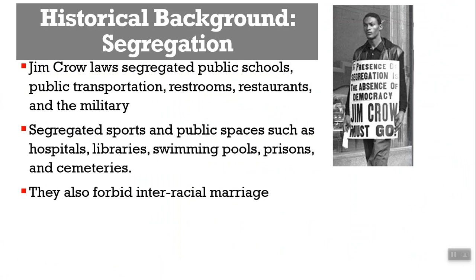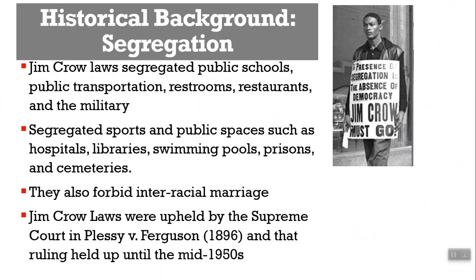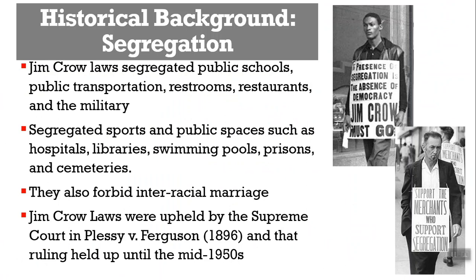Jim Crow laws were upheld by the Supreme Court in Plessy v. Ferguson in 1896. These laws really came into place after the Civil War, in response to the rights and freedoms that former slaves were getting, to curb where people could live — housing was highly segregated — to curb what jobs people were able to get, and to stop people of color from voting. These protests show how pervasive these things were, and things started to change in the mid-1950s — so over 60 years of this type of oppression.